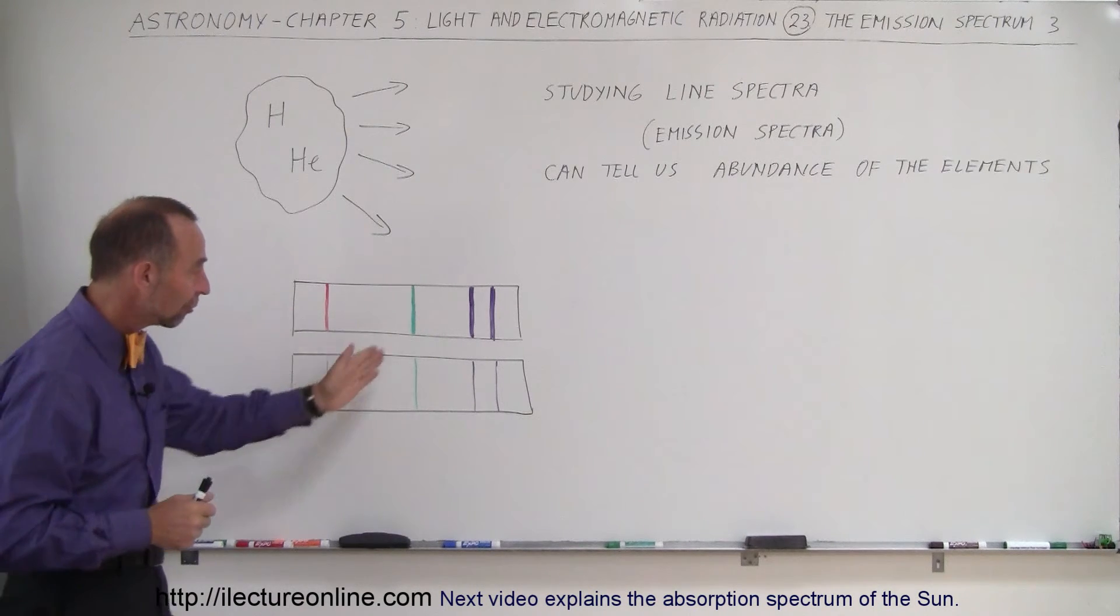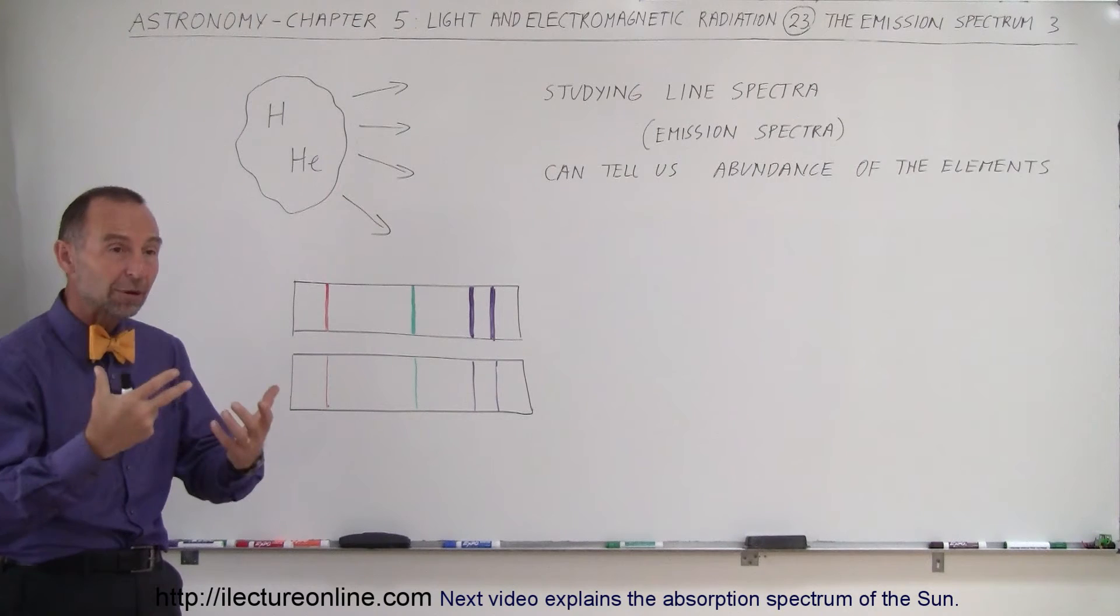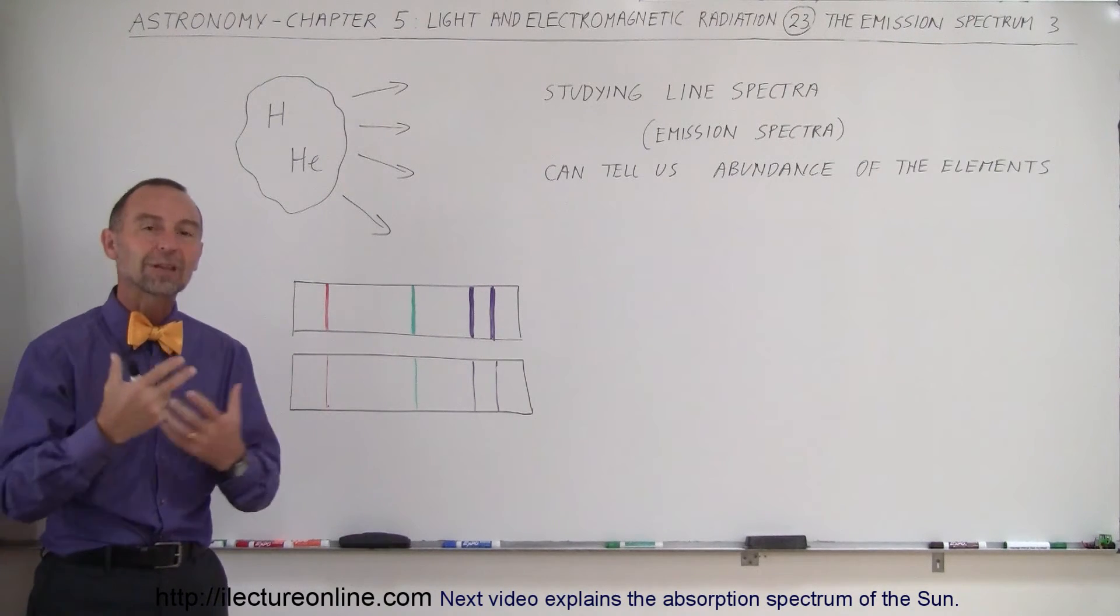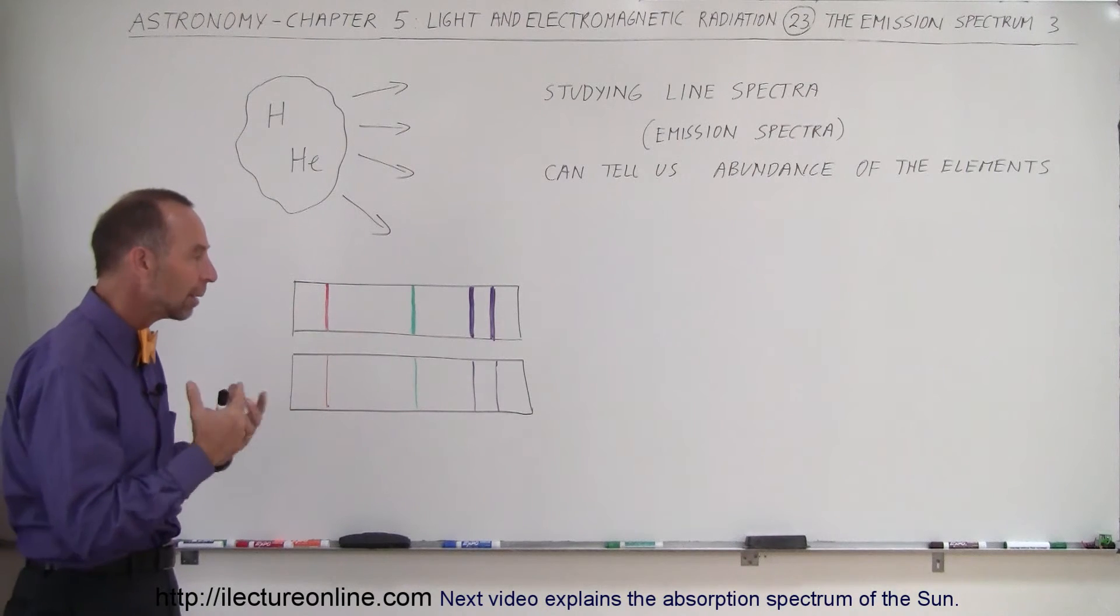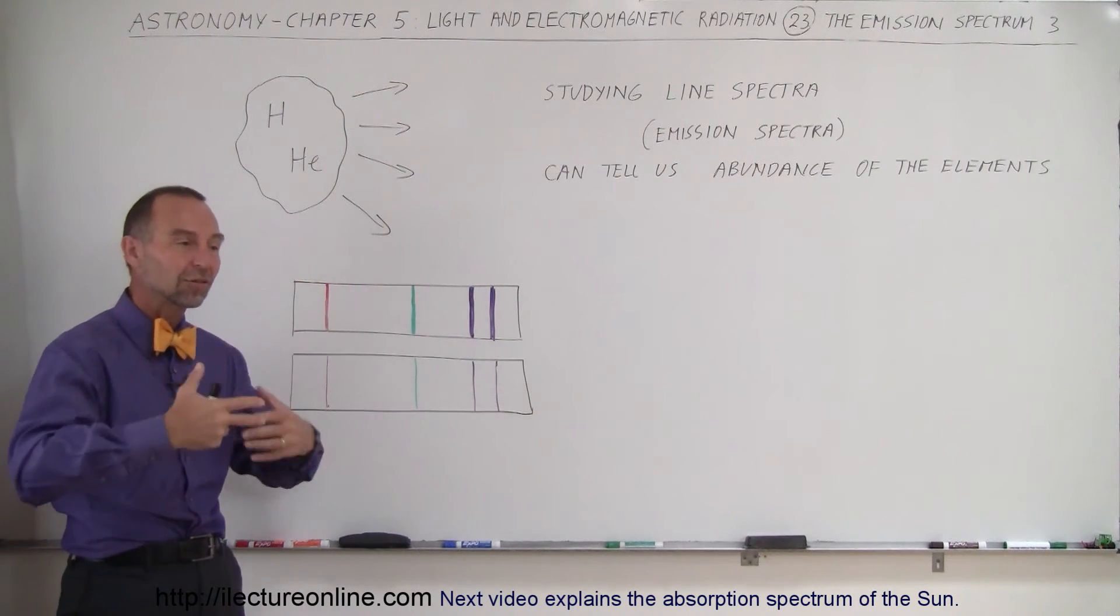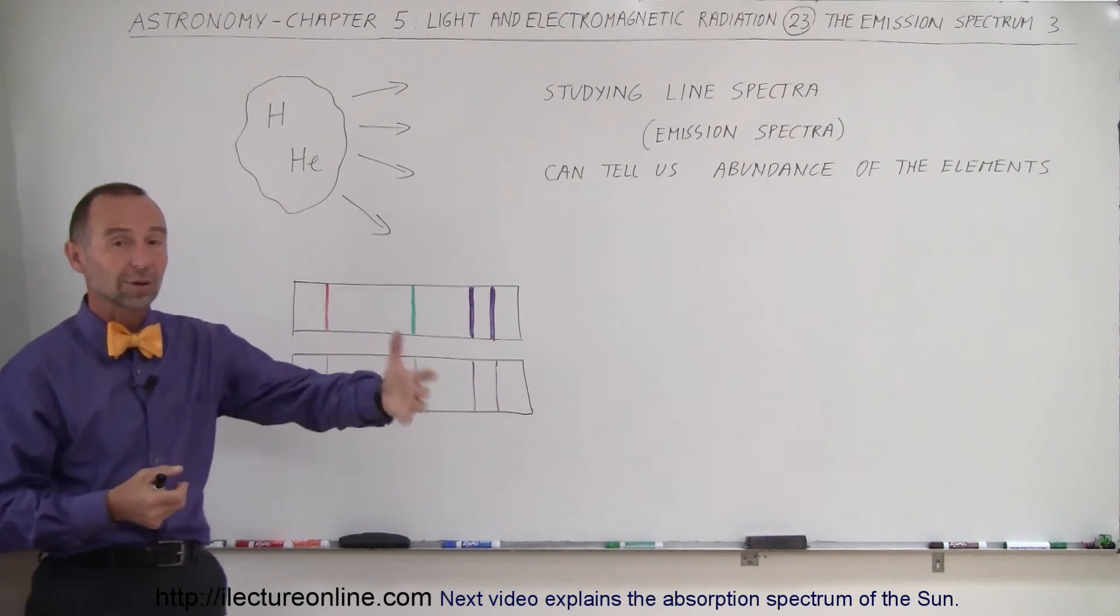Sometimes the lines are very faint compared to lines of other elements, which may be much brighter. This gives us a feel for the relative makeup of that gas cloud in space. We can say, here's a typical nebula with the typical ingredients of the universe, which is typically 75% hydrogen and 25% helium.